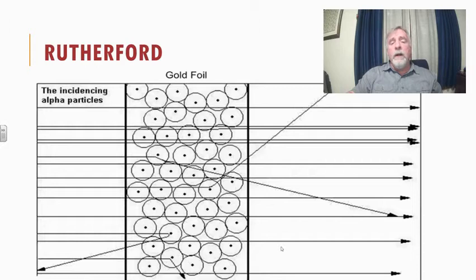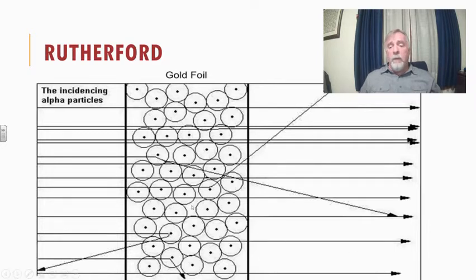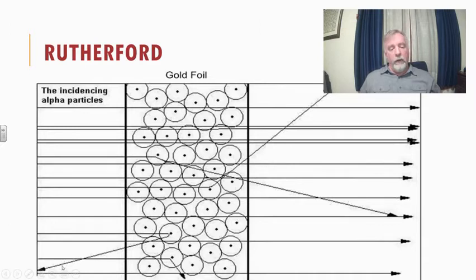If you look in the middle of the screen, he had this piece of gold foil and he had these alpha particles — that's what these arrows are — going across the page. He bombarded these alpha particles into the gold foil. Our expectation was that the alpha particles would go right through, and most of them did, but he found out that a very small number sometimes would bounce back at him.